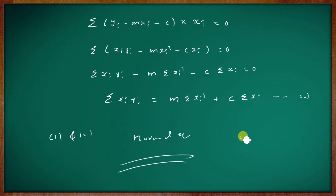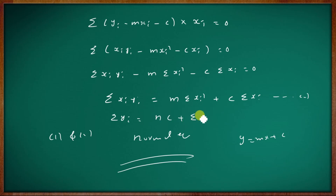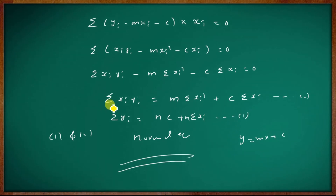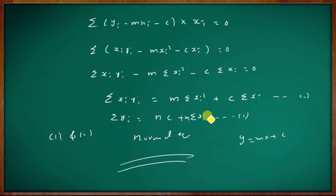So the two normal equations are: equation 1, summation yi equal to nc plus m times summation xi; and equation 2, summation xi yi equal to m times summation xi squared plus c times summation xi. Using these two equations, you can solve for the values of m and c, and then substitute them into y equal to mx plus c.